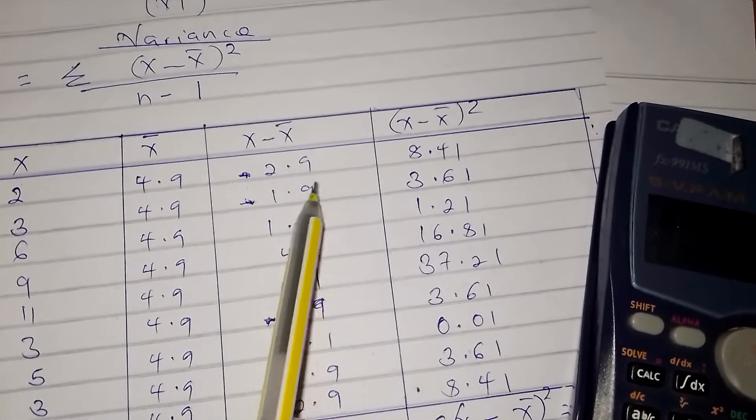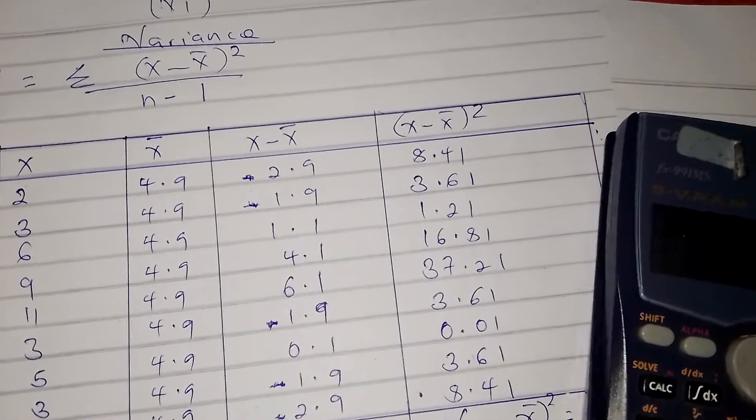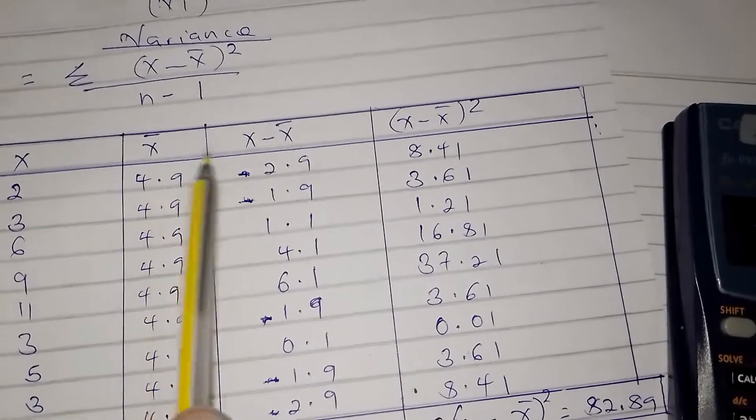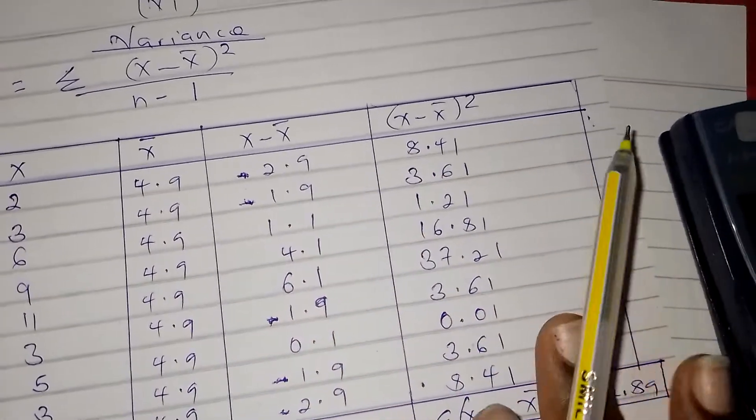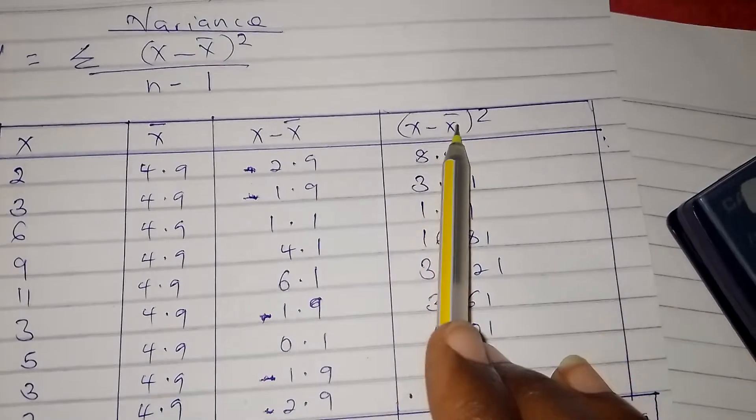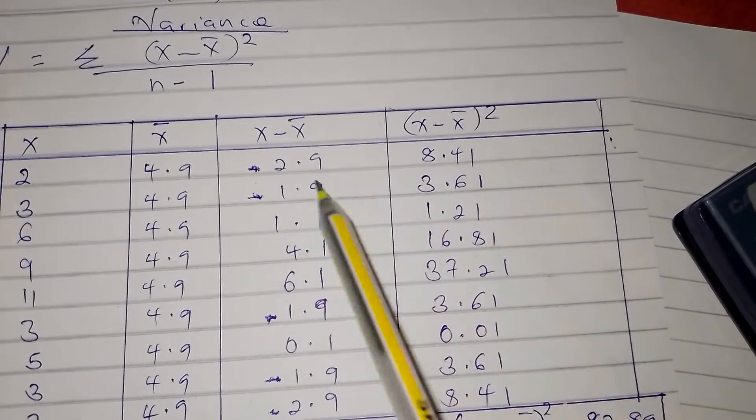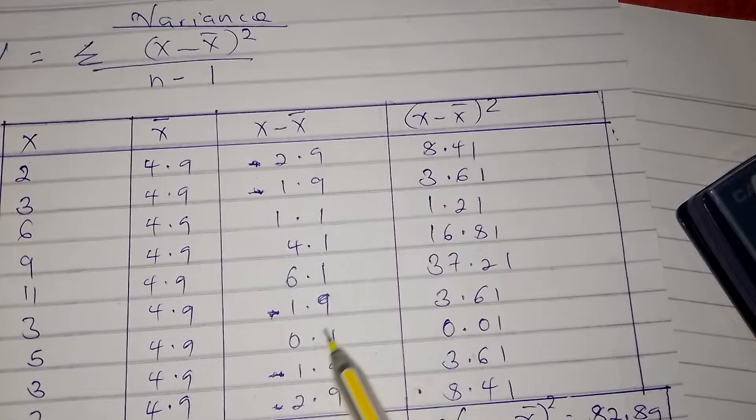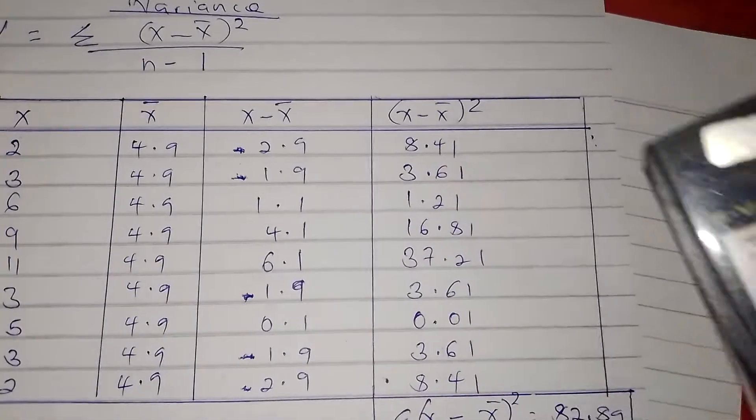We get this minus this to get this. After that we shall need the column of (x - x̄)² squared, so we square this to get (x - x̄)².